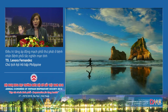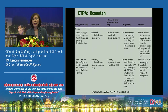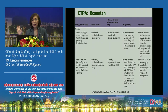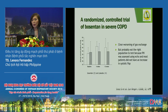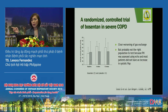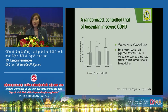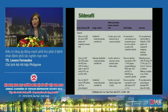Discussing endothelin receptor antagonist bosentan: two studies have been done on bosentan use in pulmonary hypertension in COPD. One study showed improvement in pulmonary artery pressure, but there was a worsening of gas exchange. This is one of the reasons it is not recommended as first line — it can worsen hypoxemia in some cases.